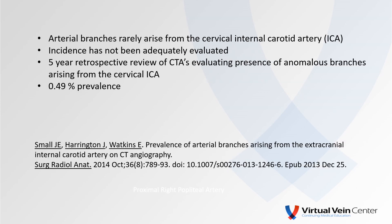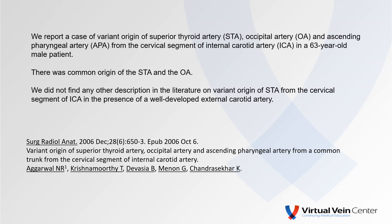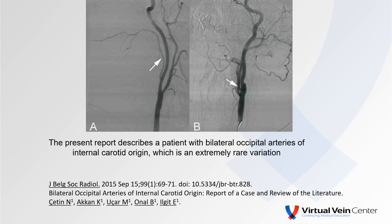Another study from the European literature surmises that arterial branches do in fact rarely arise from the cervical ICA, and therefore the incidence has not really been adequately evaluated. This was a five-year retrospective study of CTs — they found a 0.49% prevalence. And in case you're interested in a case report, I included a reference also from the European literature — a well-written case report about a 63-year-old male who had a variant of the superior thyroid artery, the occipital artery, as well as the ascending pharyngeal arising from the cervical segment of the ICA, with a common trunk of the superior thyroid and occipital arteries.